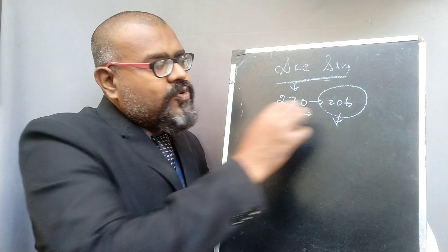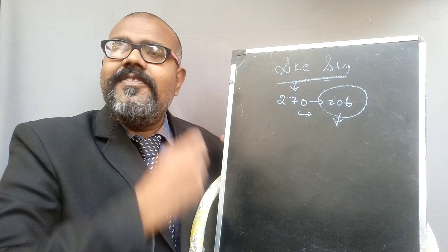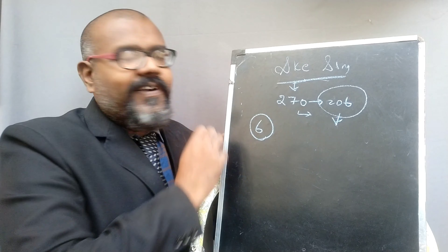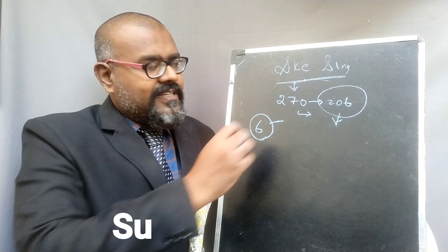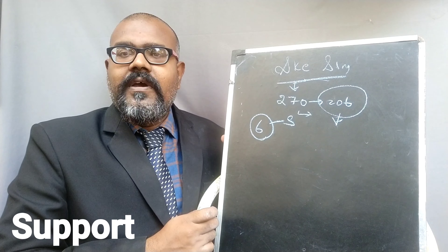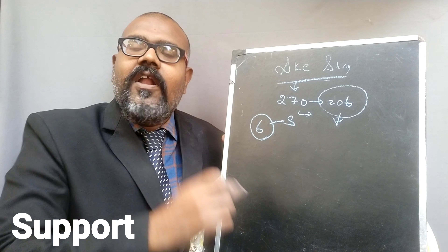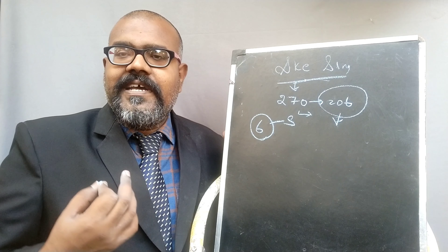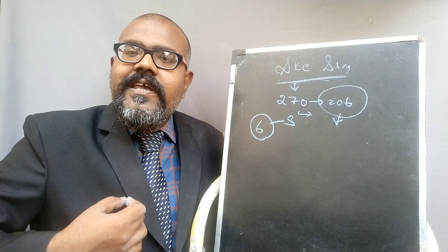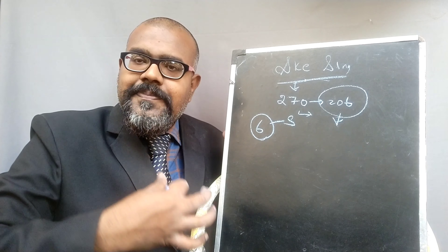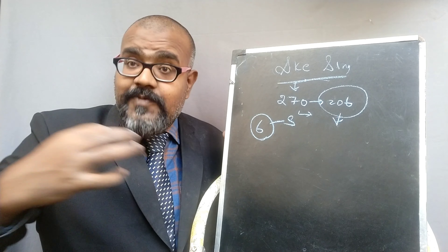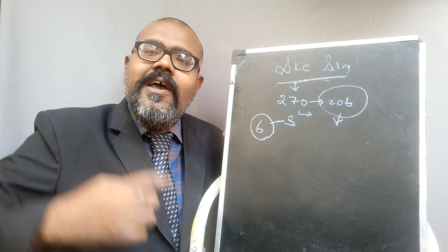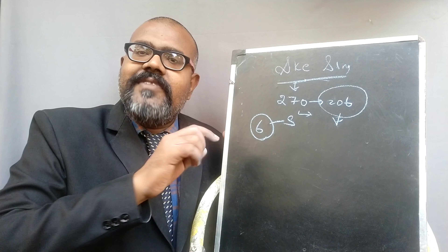What is the purpose of these 206 bones? They serve six main functions. The first function is support. The bones give support to the internal organs. For example, the ribcage — during inspiration and expiration, the ribs expand and relax, providing support to surrounding systems, as we already saw in the respiratory system.